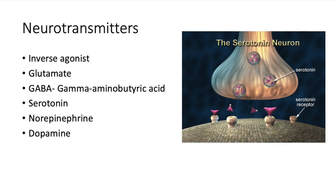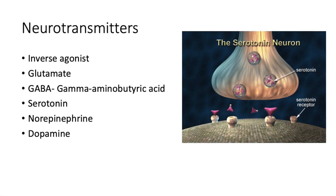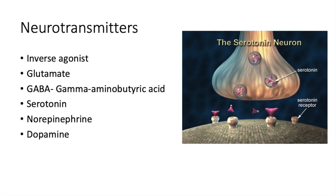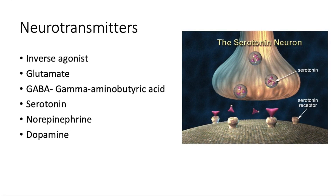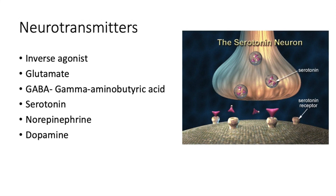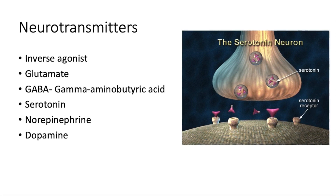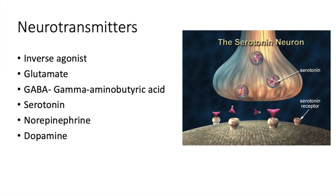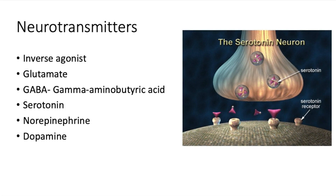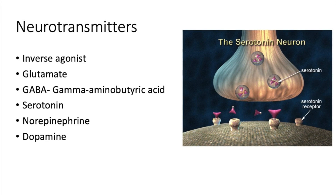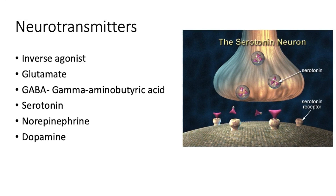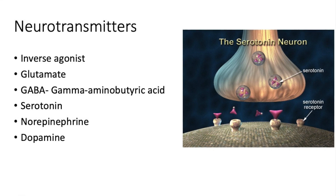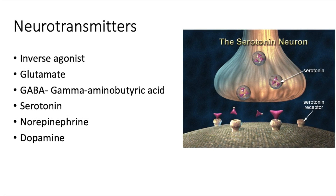Glutamate is an excitatory neurotransmitter that turns on many different neurons. GABA, or gamma-aminobutyric acid, inhibits and regulates the transmission of information and action potentials. Basically, it's the opposite of glutamate — glutamate excites, GABA inhibits. It has many chemical effects, being fast-acting and influencing many areas.